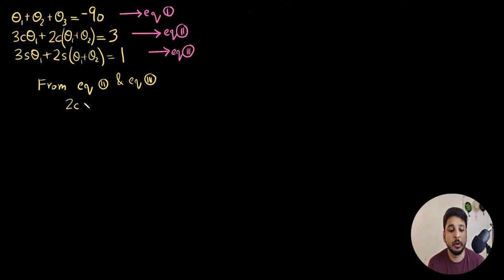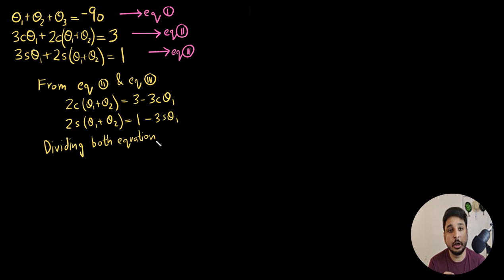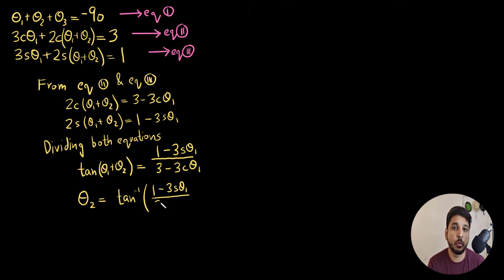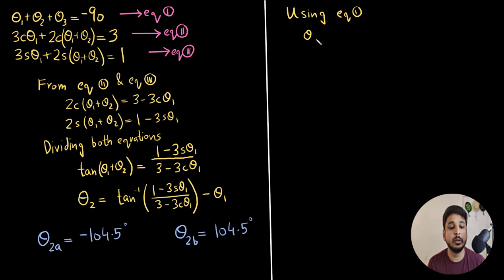Now fast forwarding again, I am just manipulating these equations and I am finding out theta 2 values. Again, I am going to get two different values theta 2a and theta 2b. Theta 2a corresponds to the first solution, which is theta 1a and theta 2b corresponds to theta 1b.